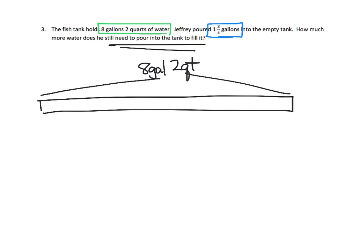A fish tank holds 8 gallons, 2 quarts of water. That seems pretty important. Jeffrey poured 1 and 3 quarters gallons into the empty tank. How much more water does he need to pour into the tank to fill it? Let's see. You've got a tank. And that tank could hold 8 gallons and 2 quarts. Now, Jeffrey poured 1 and 3 quarters gallons into this empty tank.